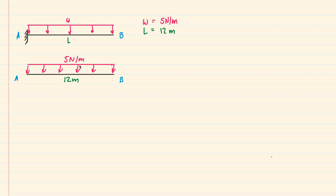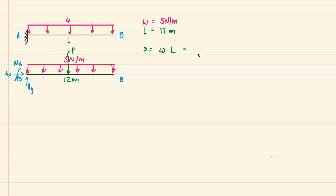Here is our free body diagram. We have our uniformly distributed load of five newtons per meter over a 12 meter length. At point A, since we have a fixed support, we know that fixed supports provide a vertical reaction Ay, a horizontal reaction Ax, and a bending moment which I'll call Ma. To make this problem easier, I'm going to resolve this distributed load into an equivalent point load P acting at the center of the beam.